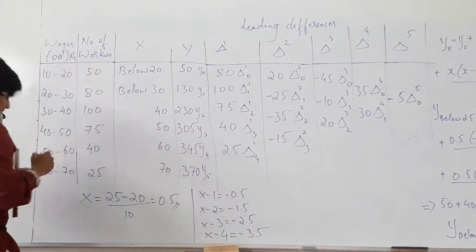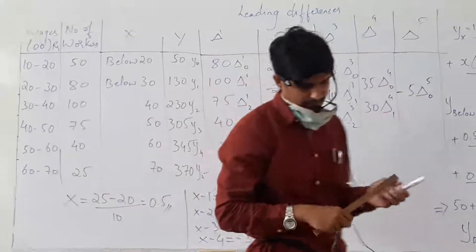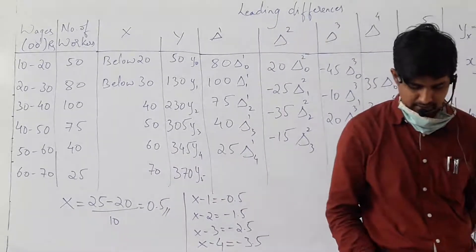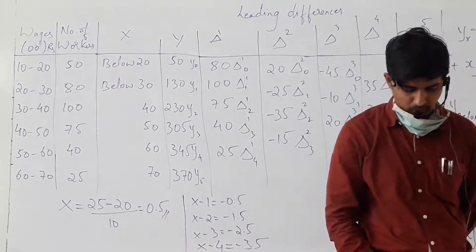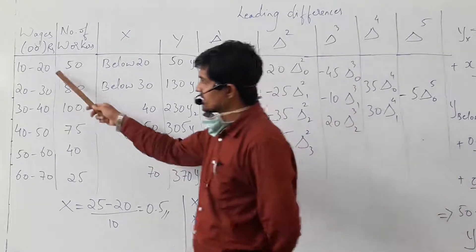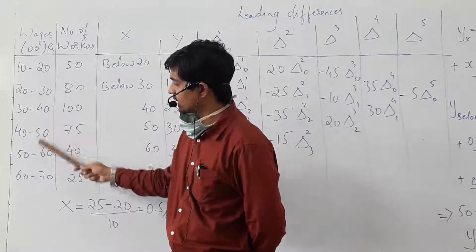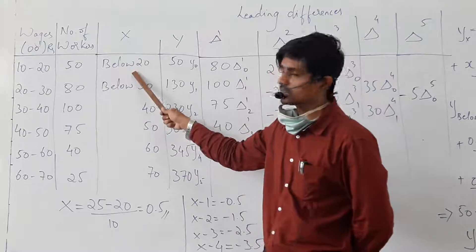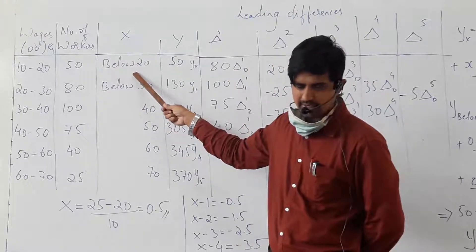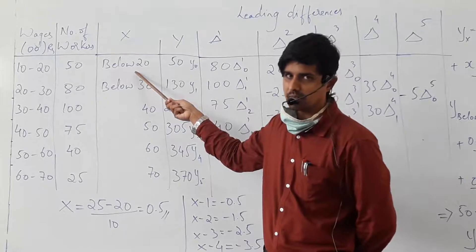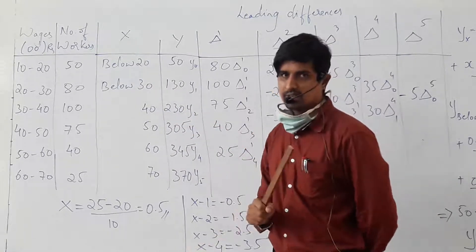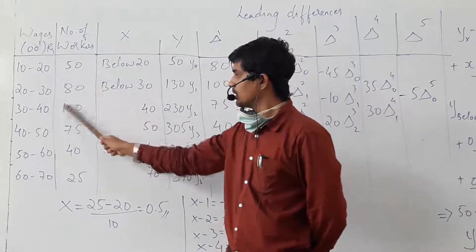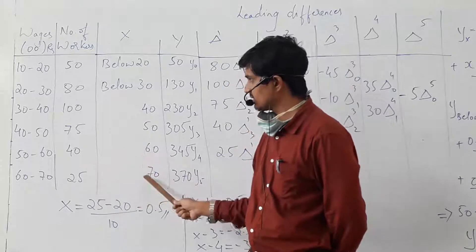So 250. Now let's look at it — below 25. We have to convert this to a 'less than' frequency table. Less than frequency — we can convert that: below 20, below 30, below 40, below 50, below 60, below 70.